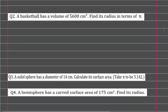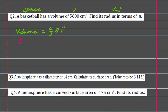Question number two: a basketball has a volume of 5600 cubic centimeters. Find the radius in terms of pi. Since it's a basketball, it is a sphere. Volume is 5600 centimeter cubed, and we have to find the radius. We will not plug in the value of pi because we need the answer in terms of pi.